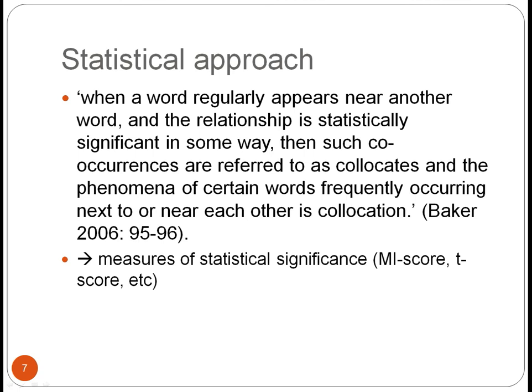Collocates are usually calculated through measures of statistical significance, such as MI score or T score. Going back to the definition, we can tease out three criteria for collocation: first, a word regularly appears near another word; second, the co-occurrence has to be regular; and third, it has to be statistically significant. So collocation is defined as regular, statistically significant co-occurrence.